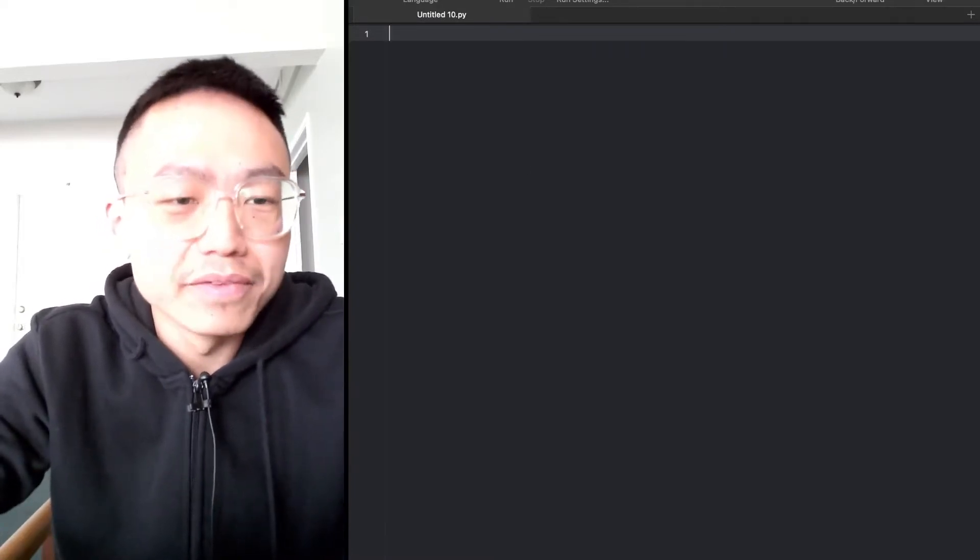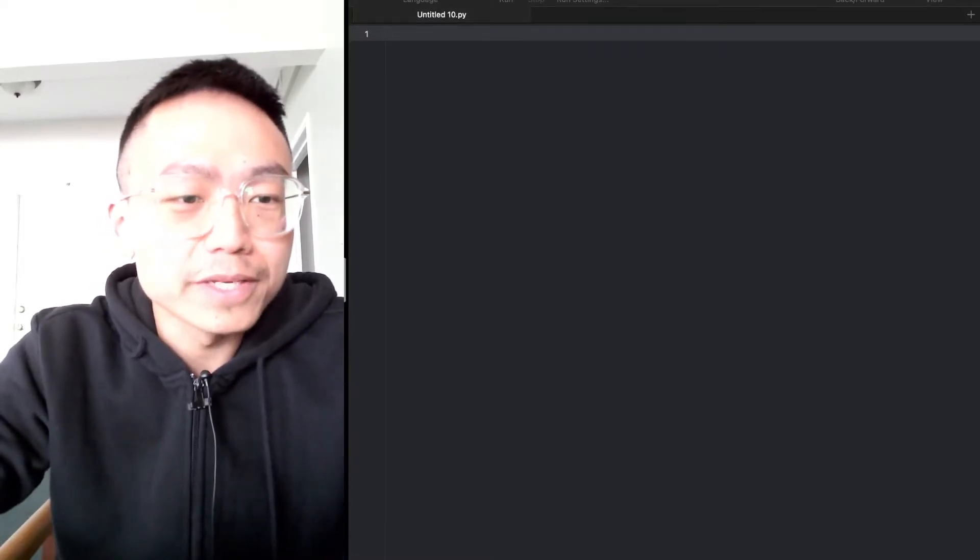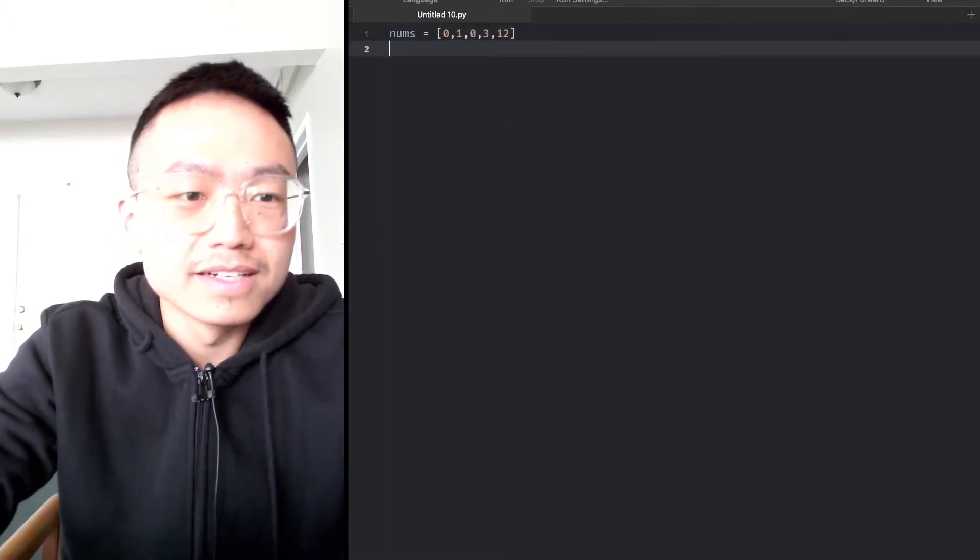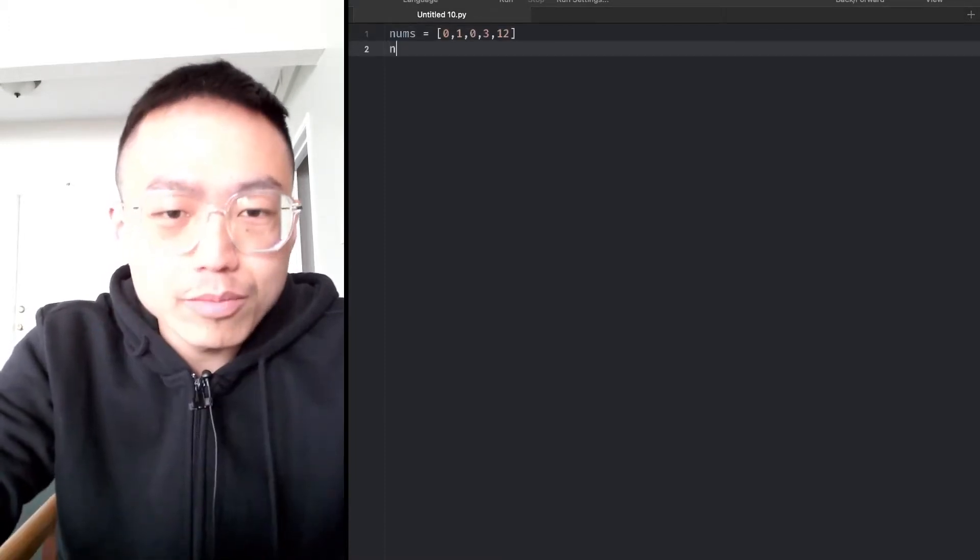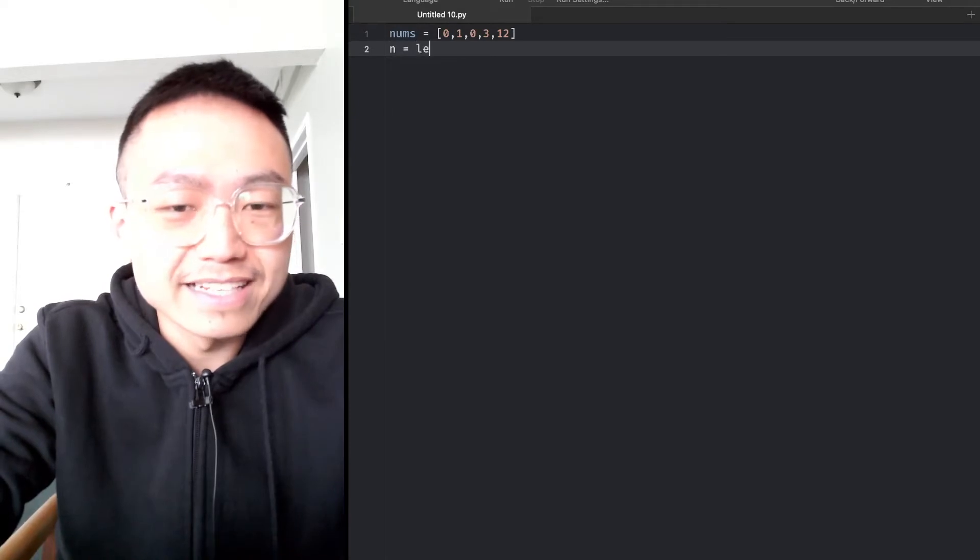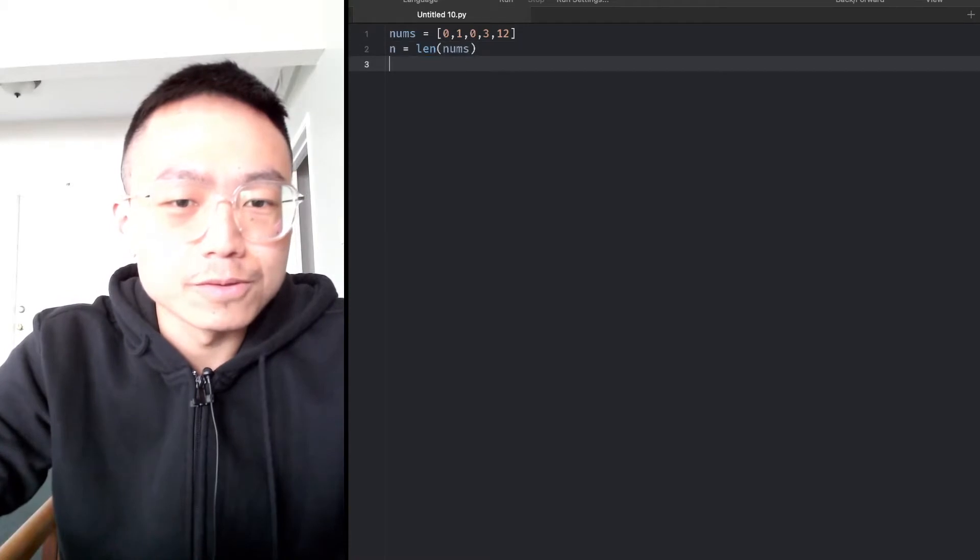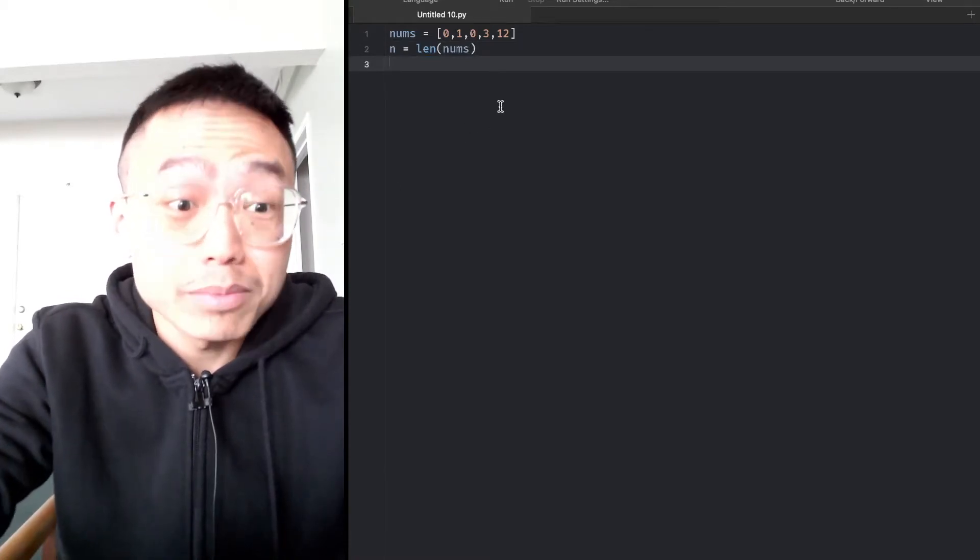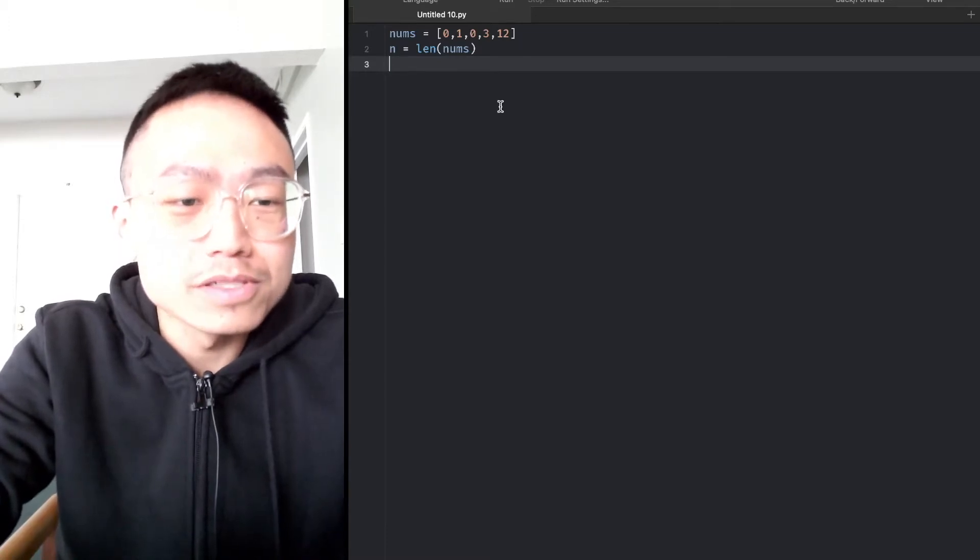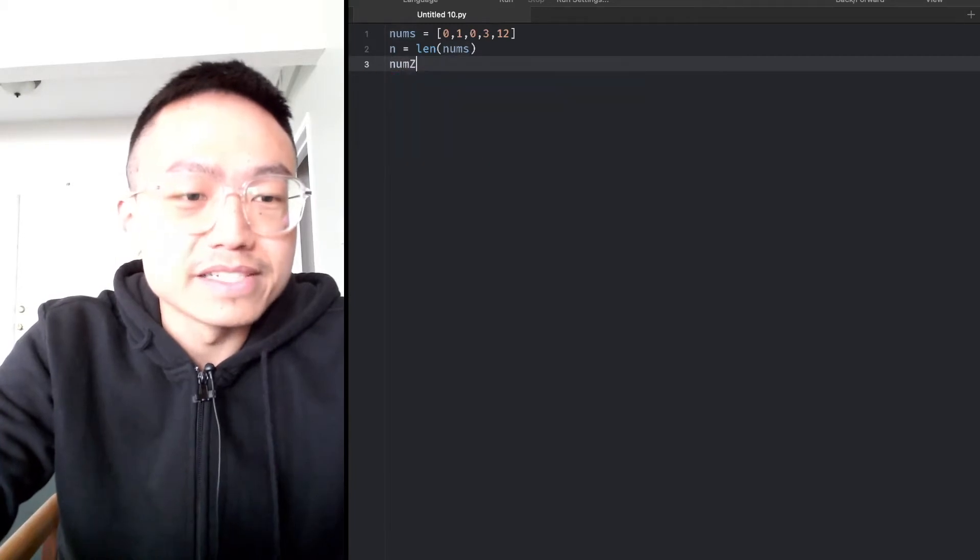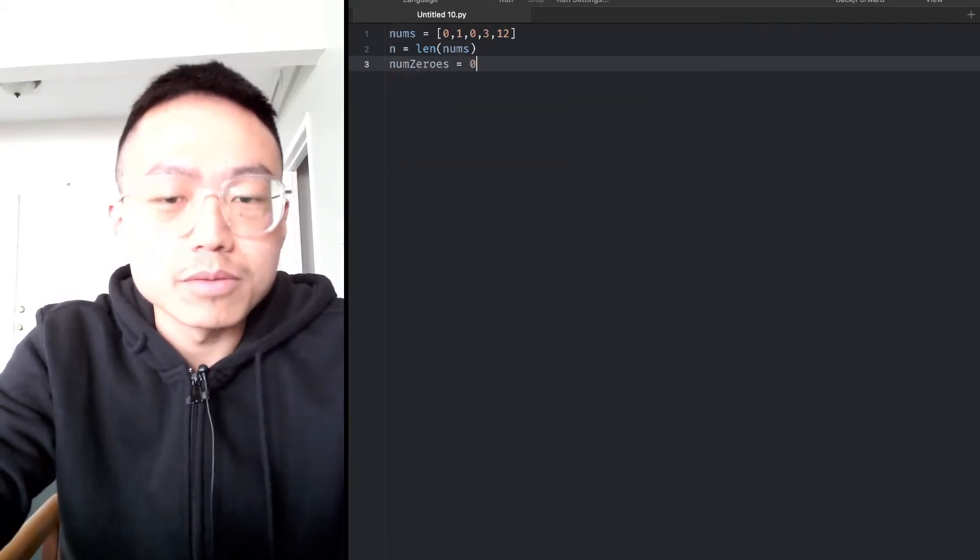Let's try to implement code in Python. First, we get the input value here, and we create a variable to declare the length. Remember, we split the problem into subproblems. First, we need to count the zeros. We set a variable numZeros starting from zero.